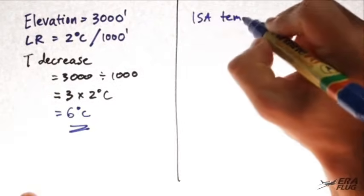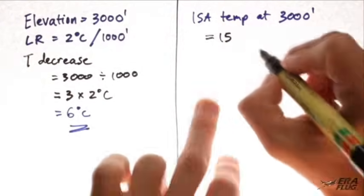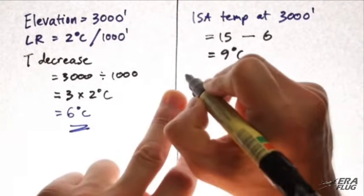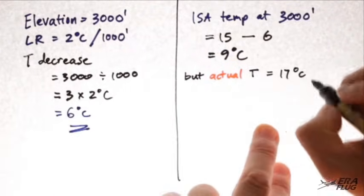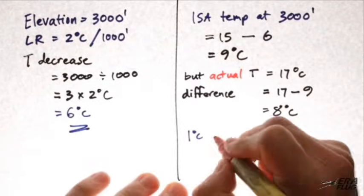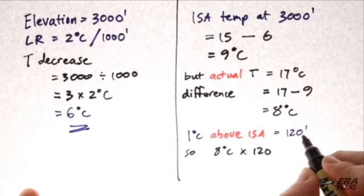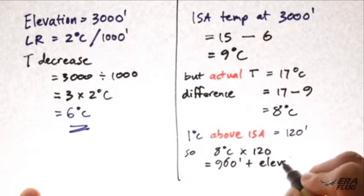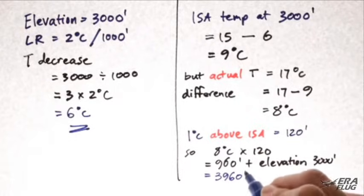Therefore, the ISA temperature at 3,000 feet will be 15 degrees C, which is the mean sea level standard temperature, minus 6 degrees C, giving us 9 degrees C. However, the actual temperature is 17 degrees C. The difference is 17 minus 9, equals 8 degrees C. So, 8 degrees times 120 feet equals 960 feet, plus our elevation of 3,000 feet. The density altitude is 3,960 feet.